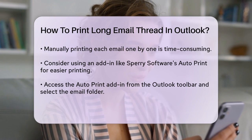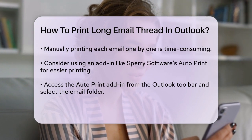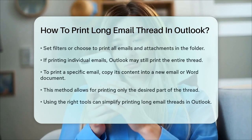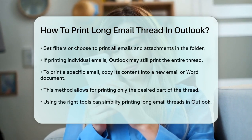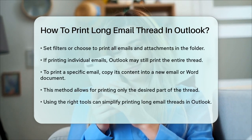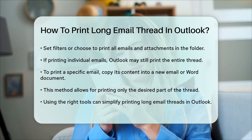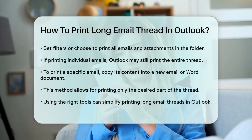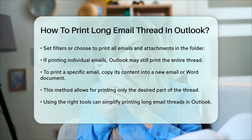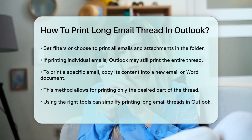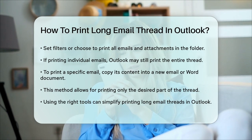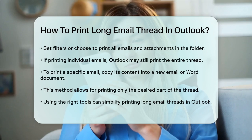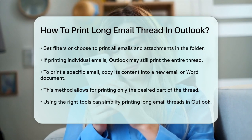If you're trying to print individual emails within a thread without printing the entire conversation, you might encounter some issues. As of recent updates, Outlook tends to print the entire thread even if you select just one email. To avoid this, you can try the following: open the specific email you want to print, copy the content of the email into a new email or a Word document, then print the new email or document. This method ensures you only print the specific part of the thread you need.